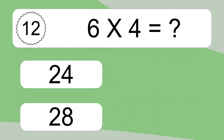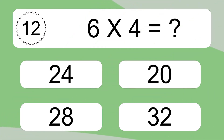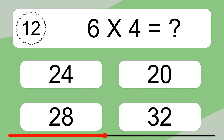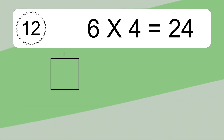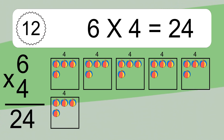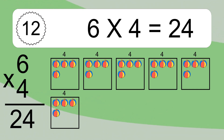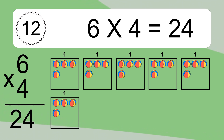6 times 4 equals what? 6 times 4 equals 24. We have 6 boxes, and each box has 4 colorful balls inside. If you count all the balls in all the boxes together, you will have 6 times 4 balls. This equals 24 balls.